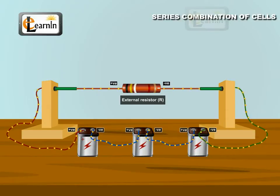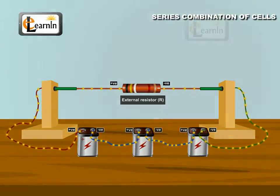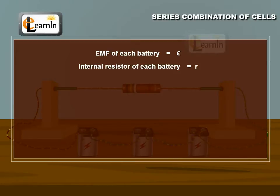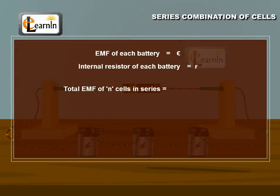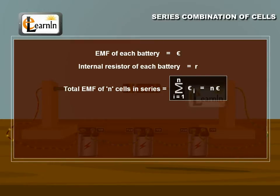For simplicity, we consider all cells to be identical, each having an EMF epsilon and internal resistance r. Therefore, the total EMF of n cells in series will be equal to the sum of n EMFs, which is equal to n epsilon. Consider this as equation 1.